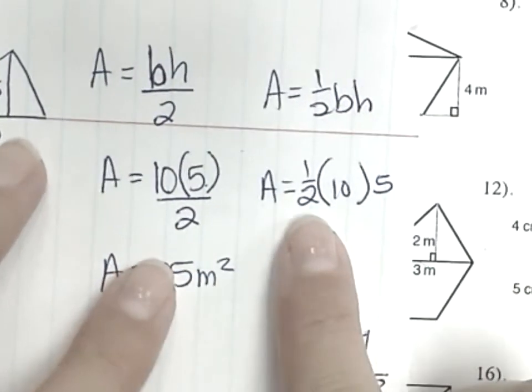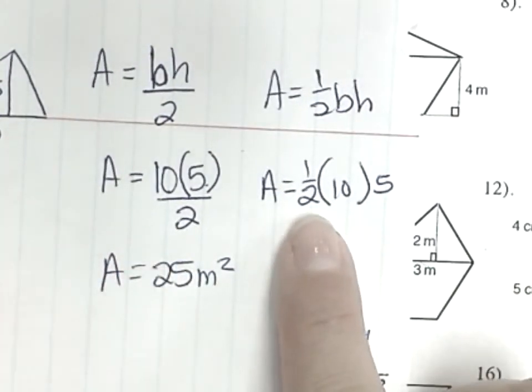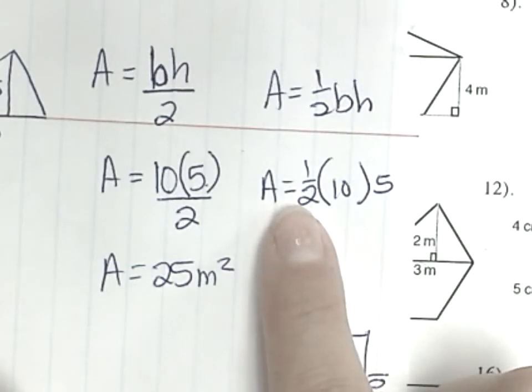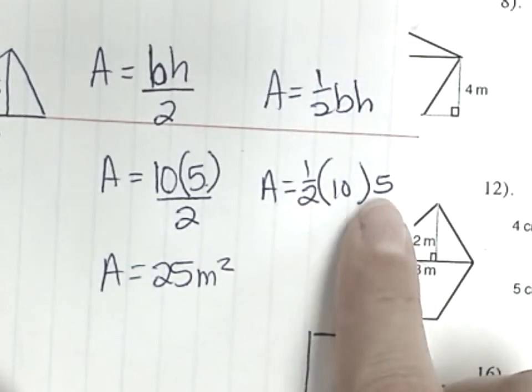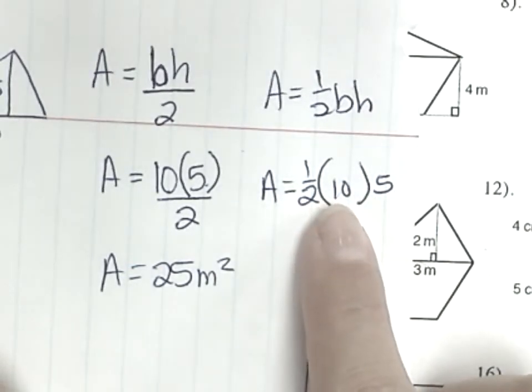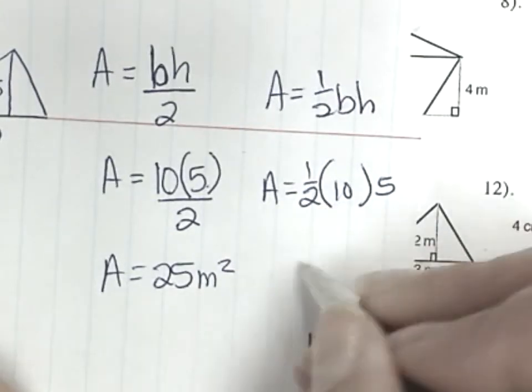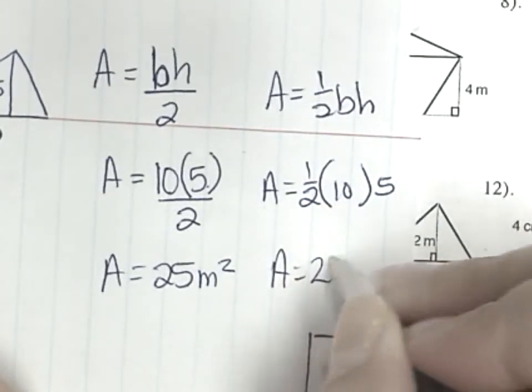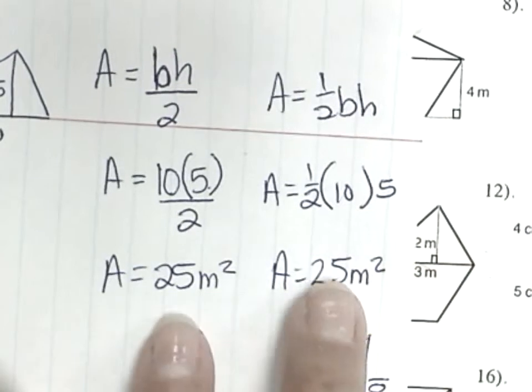Over here, take a look at this. Empty hands, eyes on the board. Because I have this half and this ten and this five, I can do it in whatever order I choose. So I'm going to choose to take half of ten. What's half of ten? Five. So five times five? Twenty-five. Area is twenty-five meters squared. Same answer.